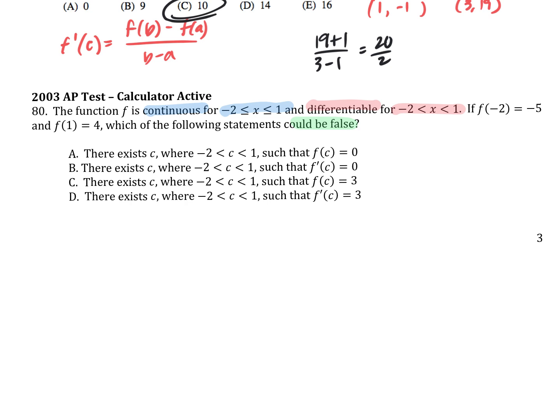If my function had the point negative 2, negative 5 and then 1, 4 — at some point does it have to cross through 0? At some point, if it's continuous. It could be there, or there, or here. That's the intermediate value theorem — which just means: if it was 19 degrees this morning and it's currently 21, did it have to be 20 degrees at some point? That's the intermediate value theorem.